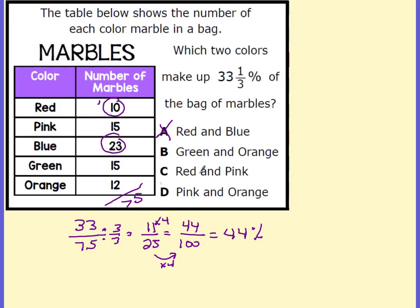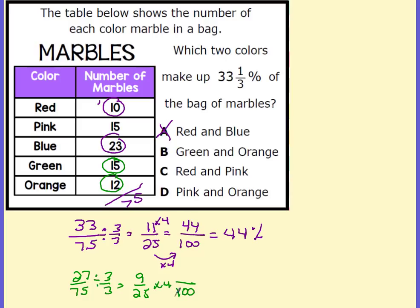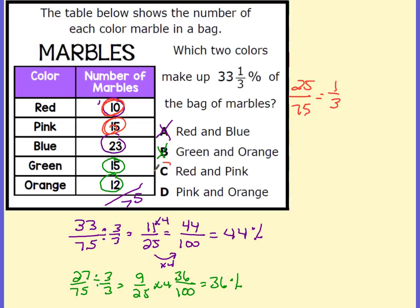For choice C — red and pink: 10 reds plus 15 pinks is 25 out of 75. This simplifies to one-third. We know one-third as a percent is repeating threes — 33 and one-third percent. So C is the answer.